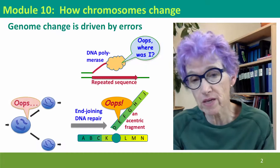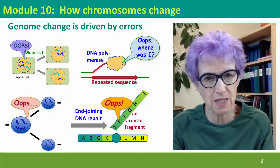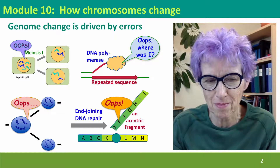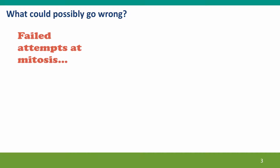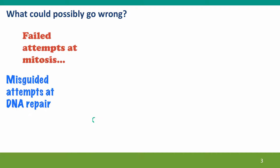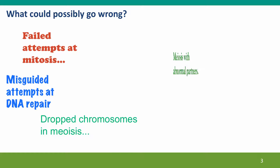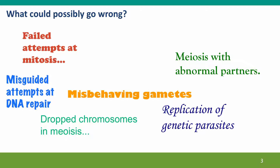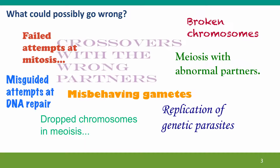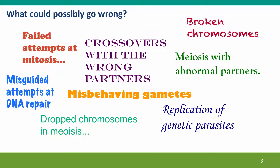It seems like everybody who's playing a role messes up sometimes. So what kinds of things could go wrong? Well, lots of things. Mitosis can go wrong. DNA repair can go wrong. Meiosis can go wrong. Lots of things you'll see can go wrong, and we're going to catalogue almost all of them.